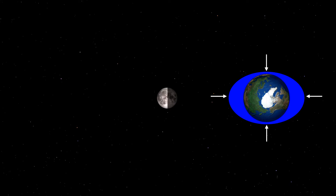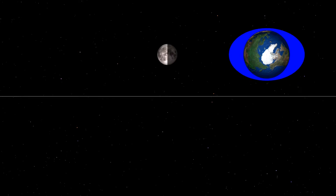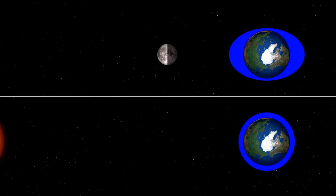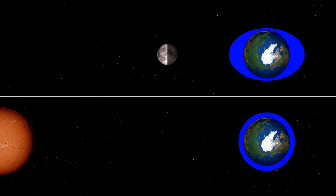The moon isn't the only actor on our stage though. We also need to consider the sun. Although the gravity of the sun is much stronger, the sun is also much farther away. What's important is that the difference in the sun's pull from one side of the earth to the other is much smaller than the moon's. This results in solar tides being less than half as high as lunar tides, like you see here.